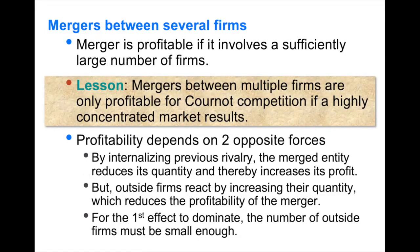What happens if more than two firms can merge? The same two effects remain: merging firms reduce rivalry among them, which is beneficial, but outside firms react to the lower merged-firm quantity by increasing their own output, which reduces merger profits. The negative effect of outside firm reaction becomes larger the more outside firms there are — or equivalently, smaller if fewer firms are outside, meaning more firms are merging.